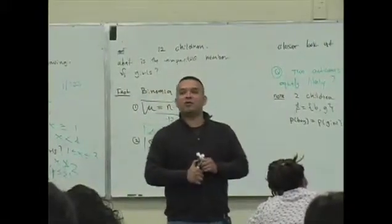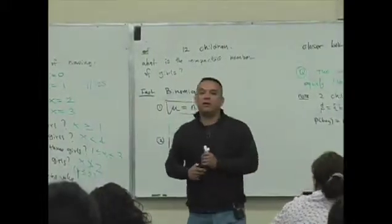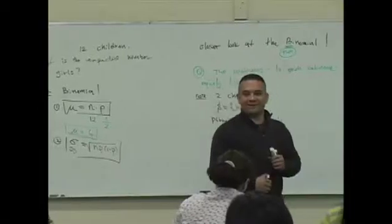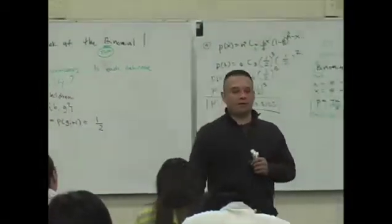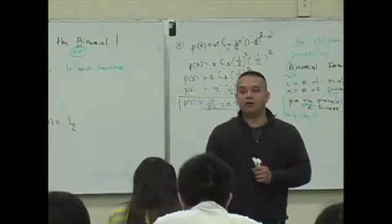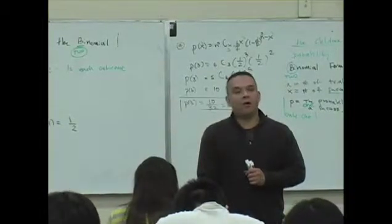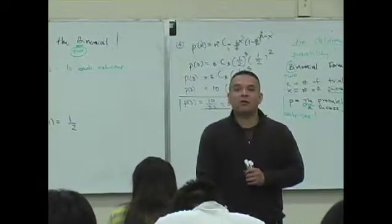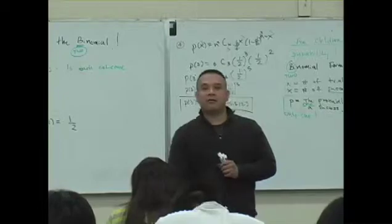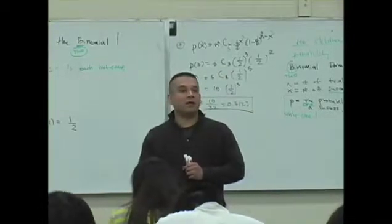This is a situation where these events are equally likely. There's a lot of situations where events are equally likely. If you roll a die, what's the probability of rolling a one? One-sixth. What's the probability of rolling a two? Three, four, five, six. All those events are equally likely when you roll a die. Is that right? So those are situations where these outcomes are equally likely.